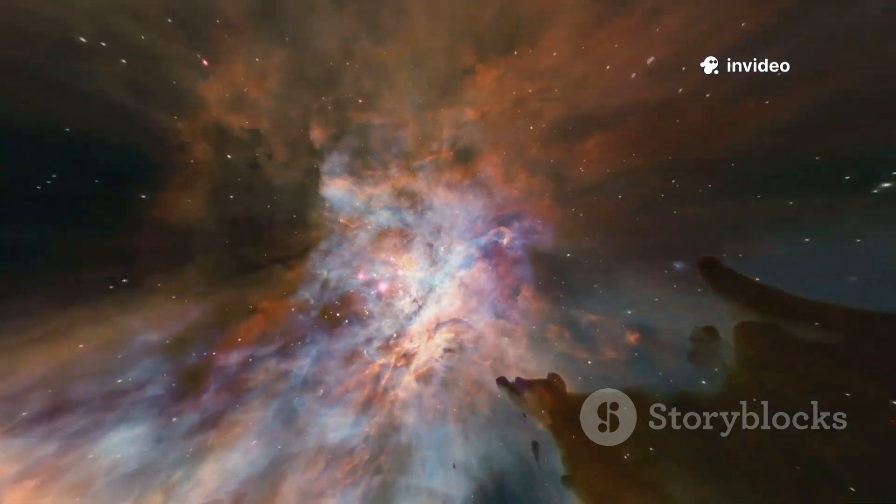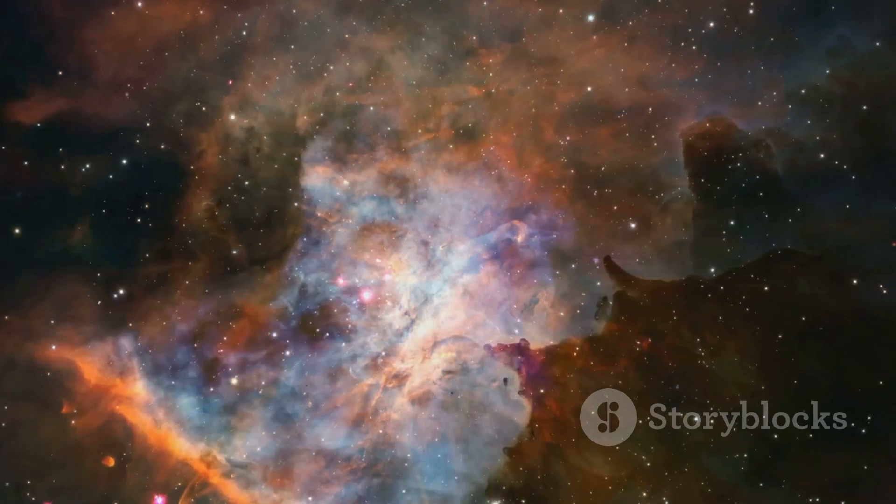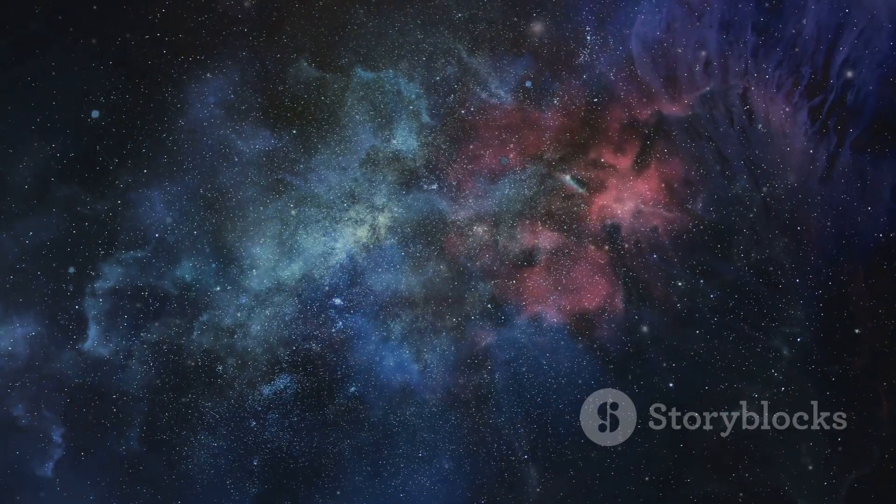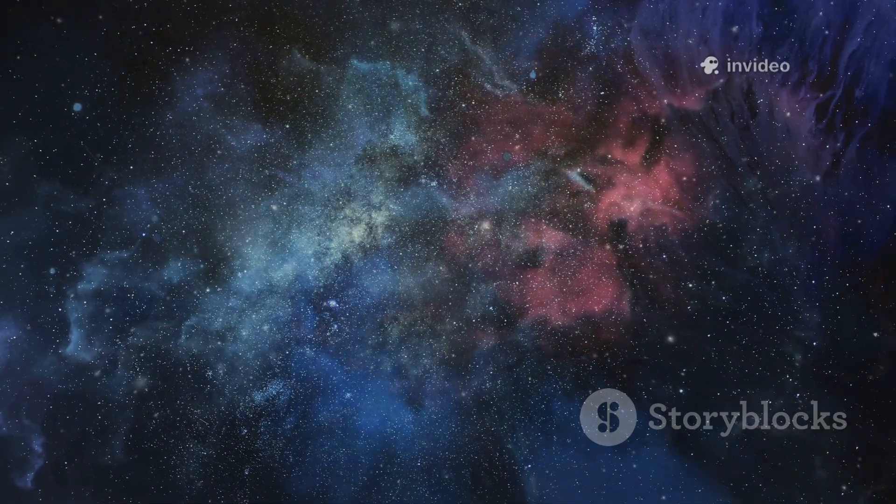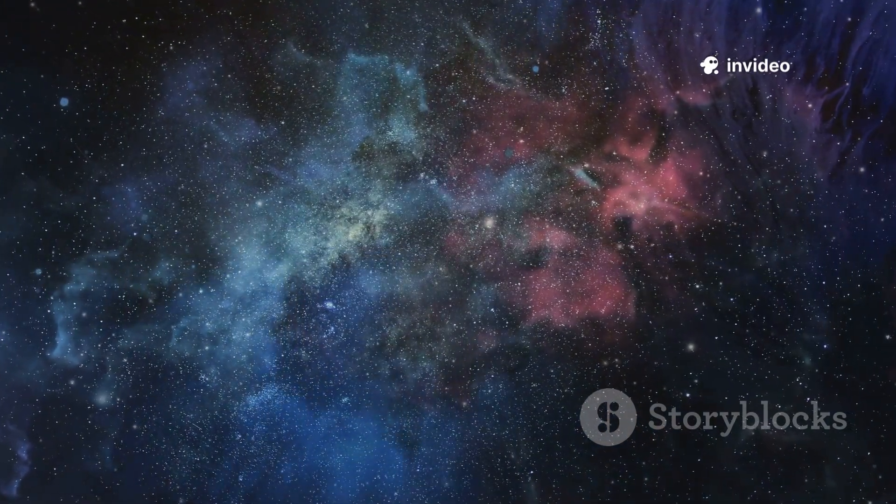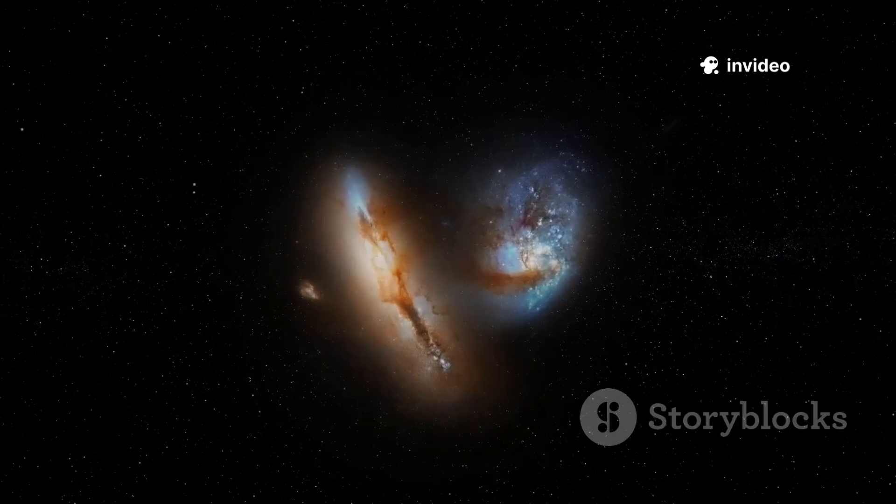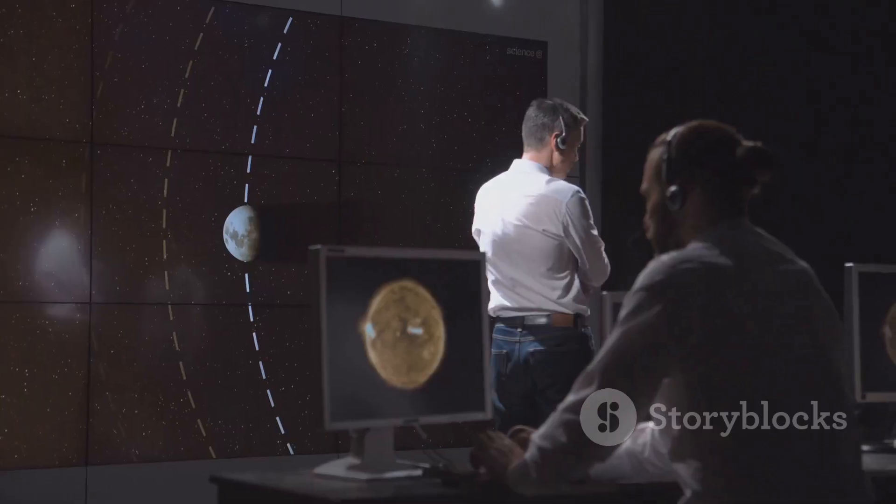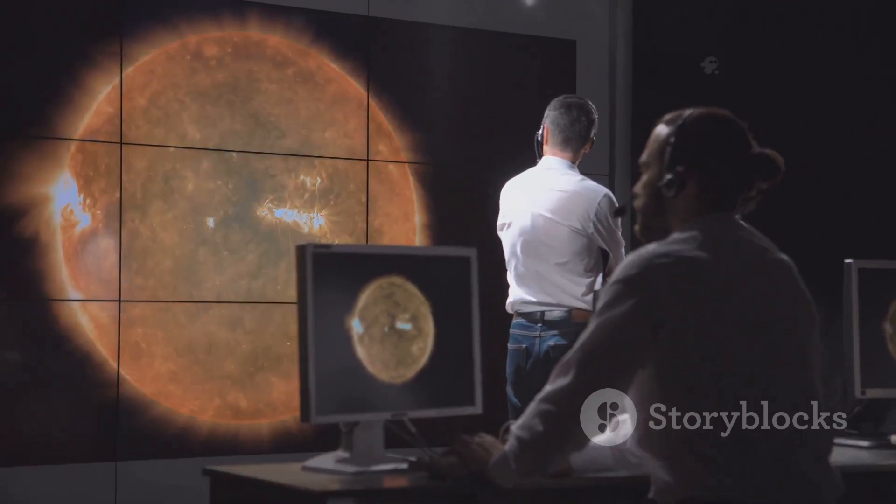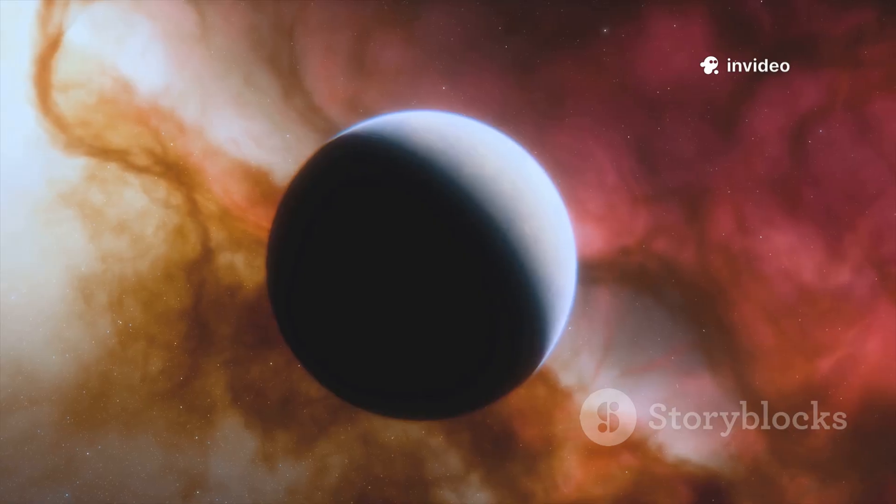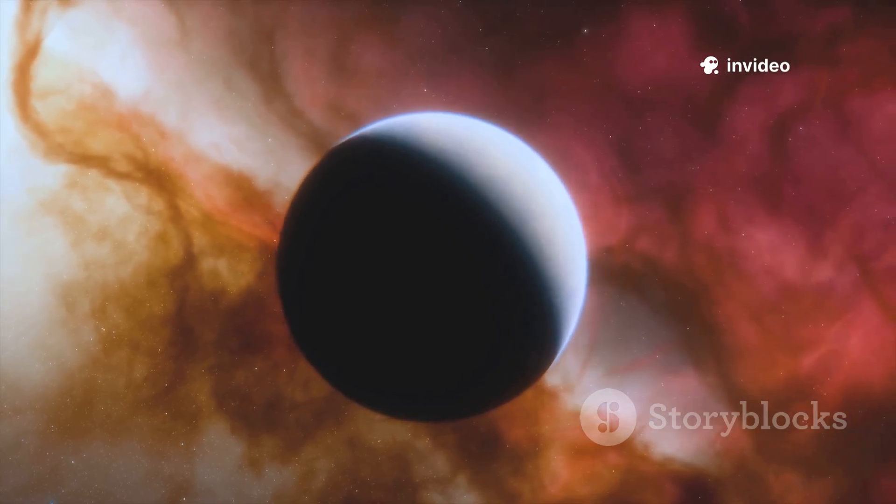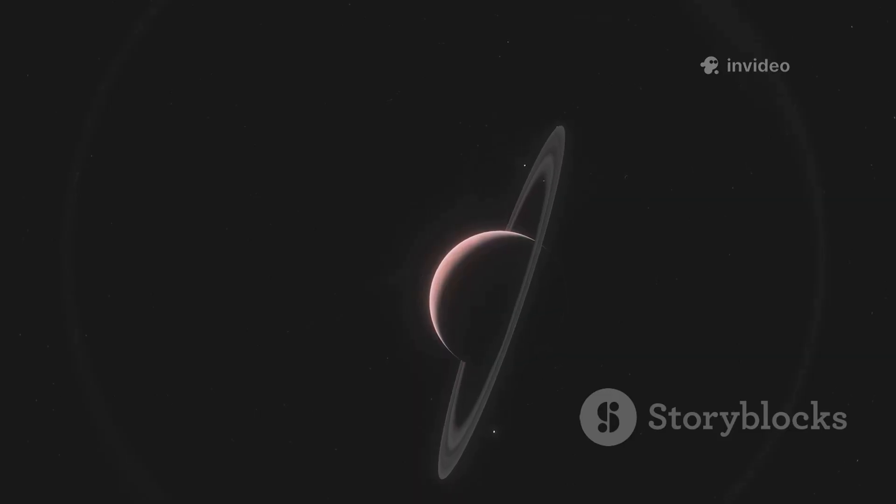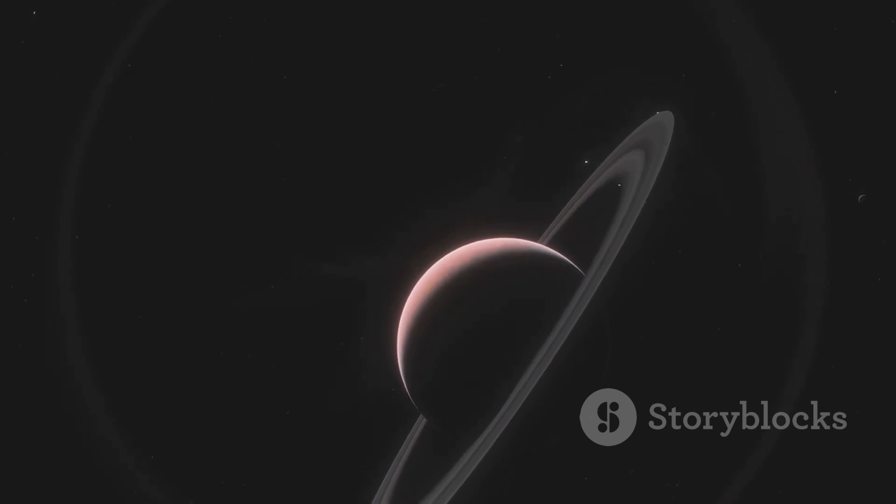Webb's discoveries do more than show us beautiful images. They help us piece together the universe's story. By looking back to the first galaxies, Webb reveals how the cosmos evolved and how our own galaxy came to be. Early galaxies were smaller and more chaotic, showing that the universe is always changing. Studying this evolution teaches us about our own origins. Webb's study of exoplanets brings the cosmic story closer to home. It searches for water and life's building blocks in distant atmospheres, hinting that life's ingredients may be common.